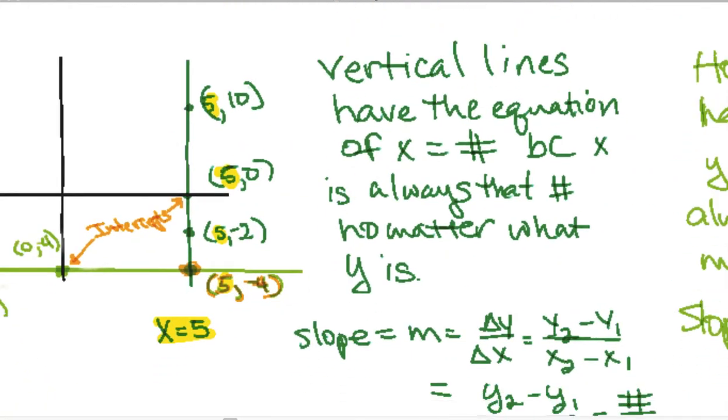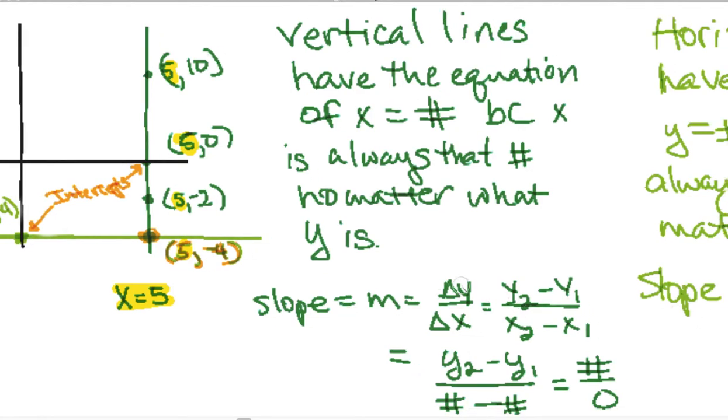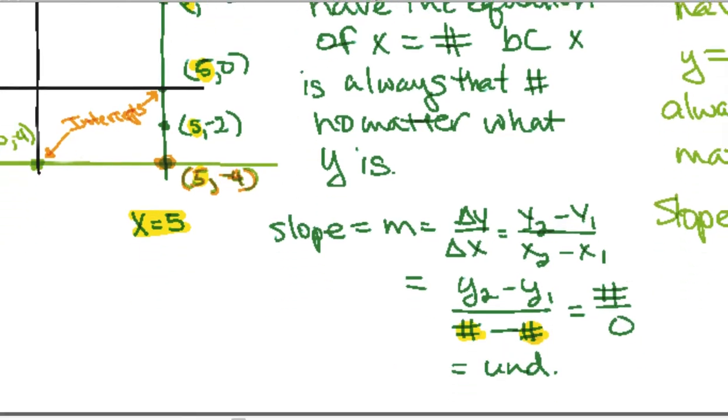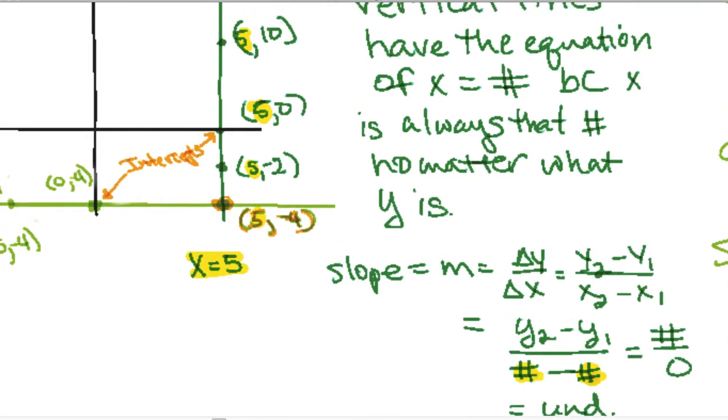If we were to find the slope of that line, which we haven't really talked about the slope yet, but the slope is basically the slant of the line. If you do the change in the y's over the change in the x's, and whatever two points you chose to pick, you would get a number for the y answer. But since in this case these are both going to be fives, so five minus five would be zero, and a number over zero is undefined. That would let you know it's a vertical line.